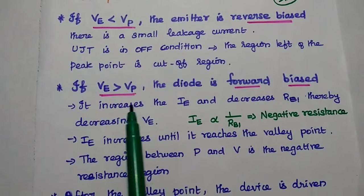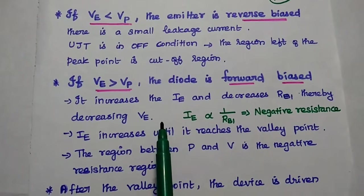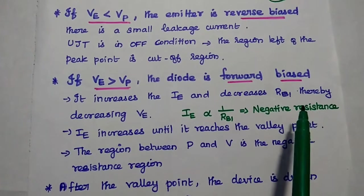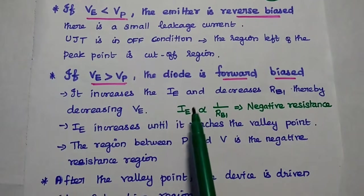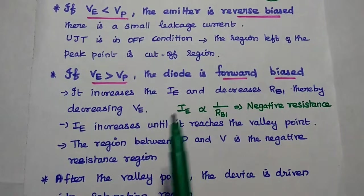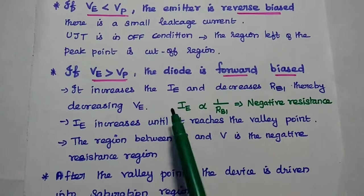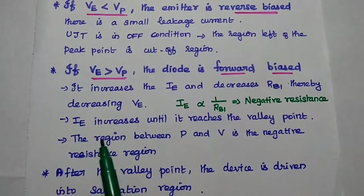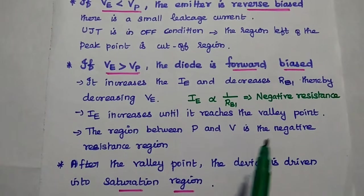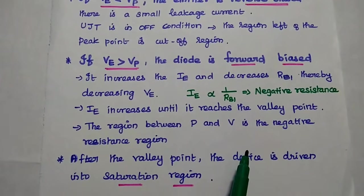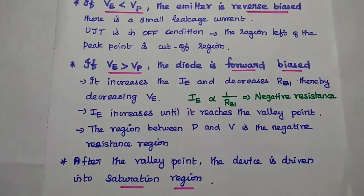IE increases until it reaches the valley point. The region between peak and valley point is known as the negative resistance region. After the valley point, the device is driven into the saturation region. So the three regions are: cut-off region, negative resistance region, and saturation region.